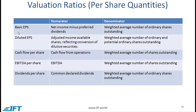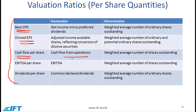We've already talked about some of these ratios before: basic EPS and diluted EPS, which we covered in the reading on the income statement. Cash flow per share tells us the total cash flow from operations divided by the weighted average number of shares. EBITDA is sometimes used as a quick proxy for cash flow. EBITDA per share is simply EBITDA divided by the weighted average number of shares. Dividends per share is the common declared dividends divided by the average number of ordinary shares outstanding.